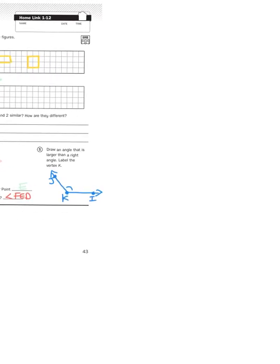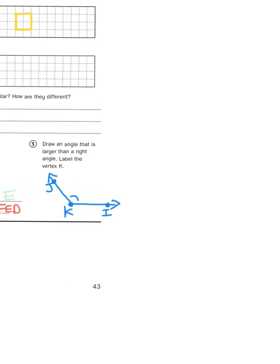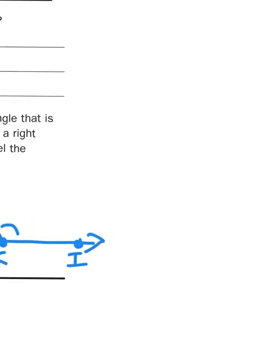Or I could draw a straight angle, which is essentially a line, or a line segment. A straight angle is 180 degrees. We'll put K right there.